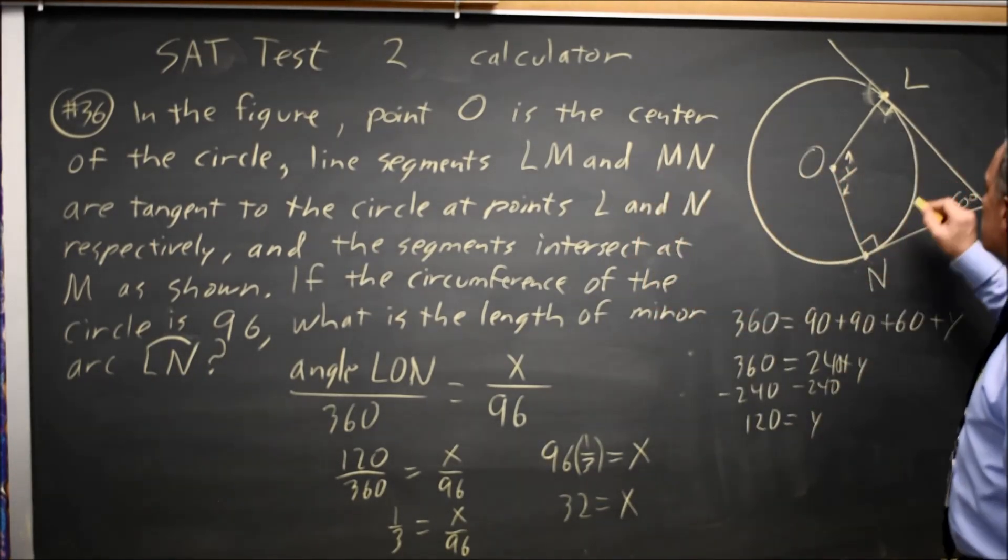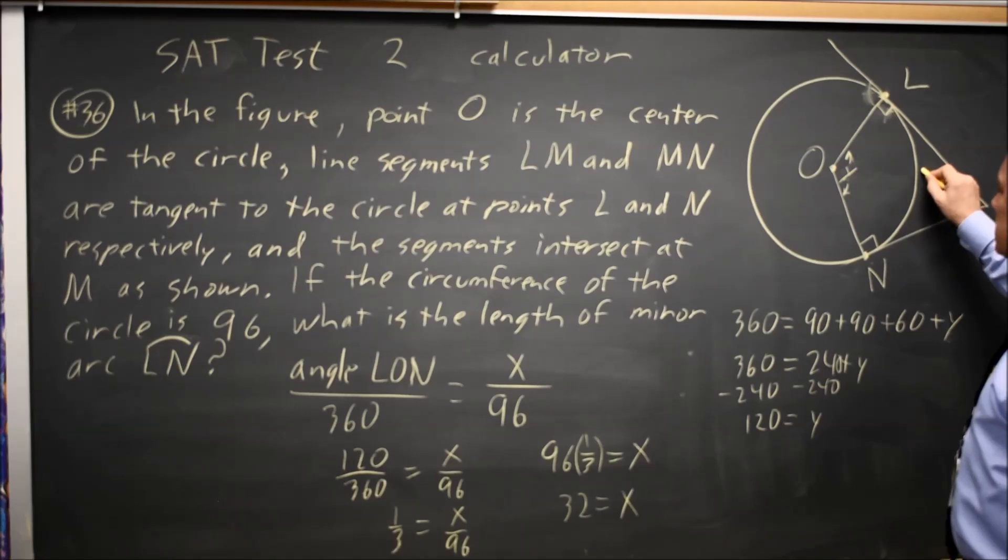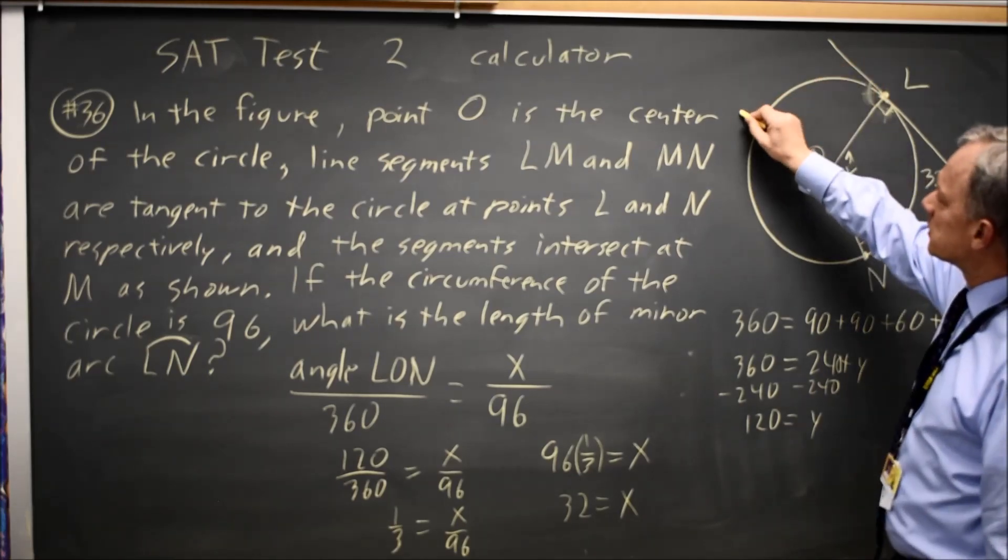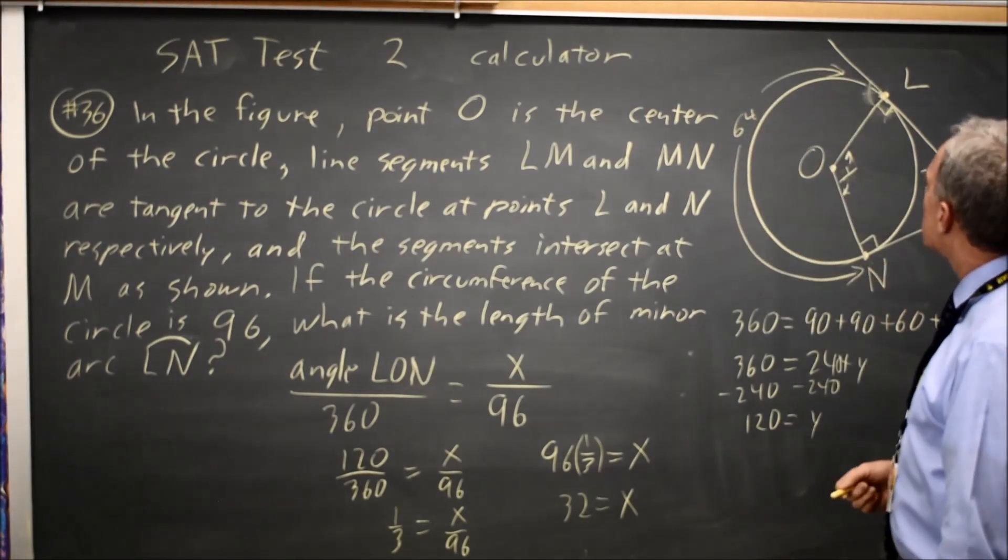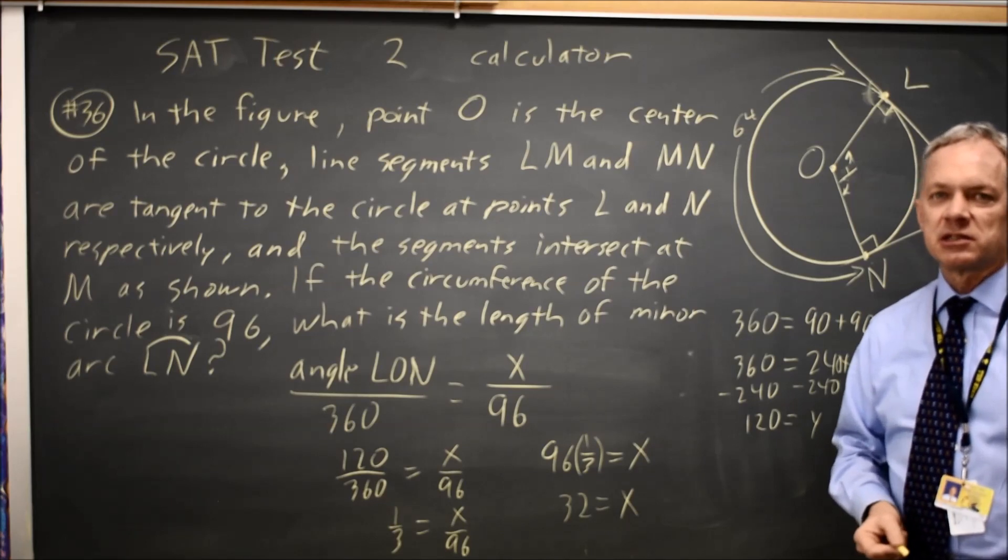And it makes sense visually that the entire circumference is 96. This would be 32, and the rest of it would be 64. That looks roughly proportionate, and this is to scale.